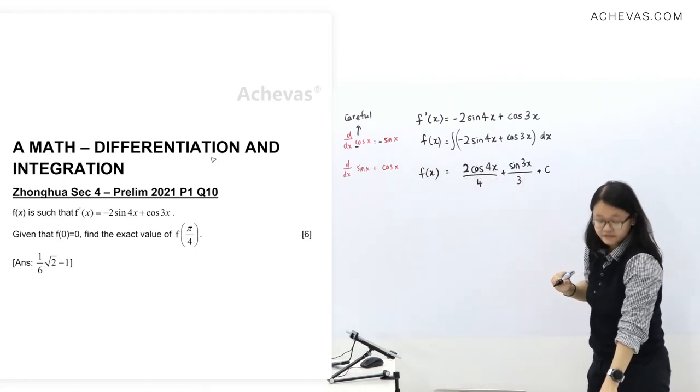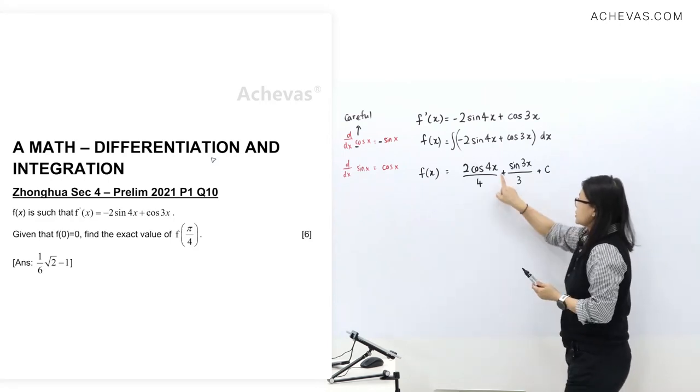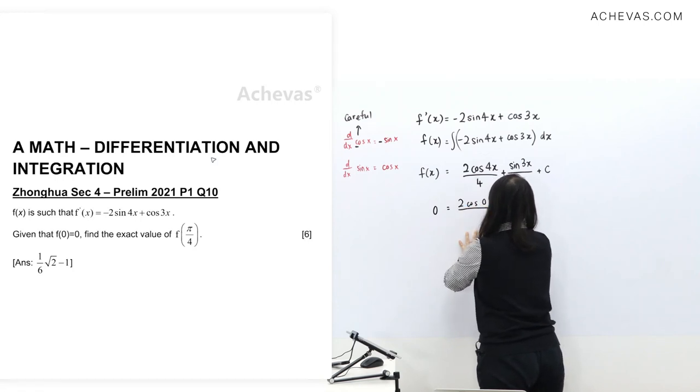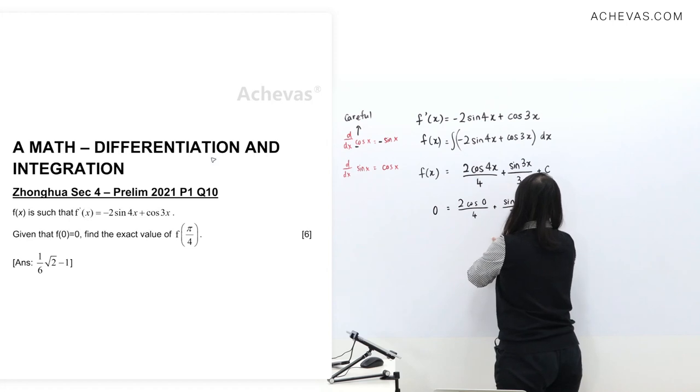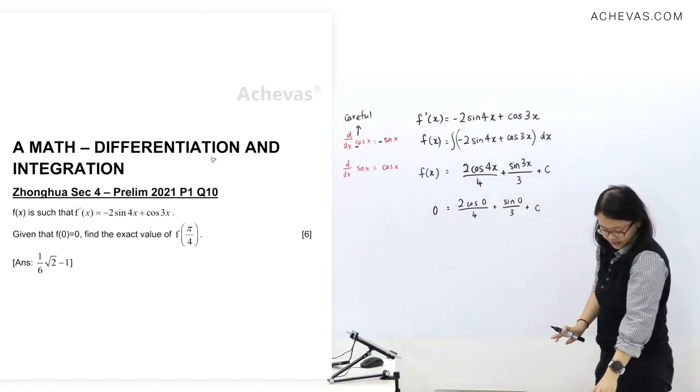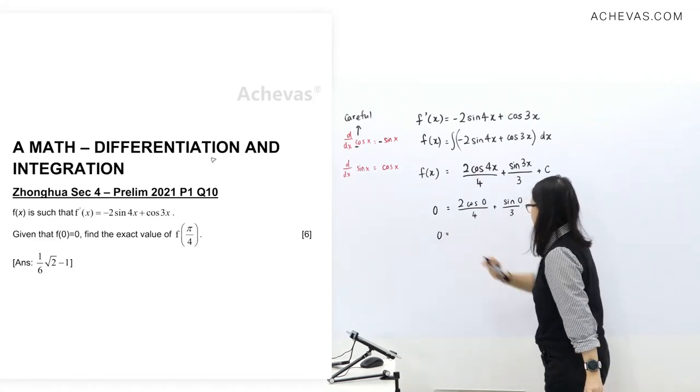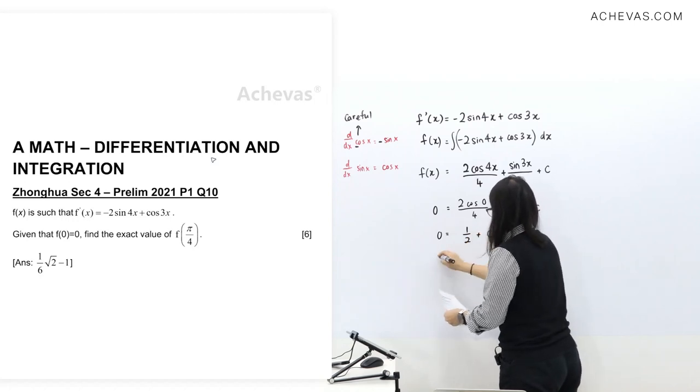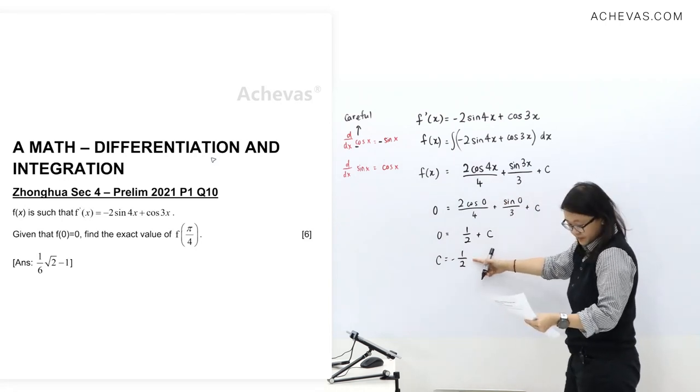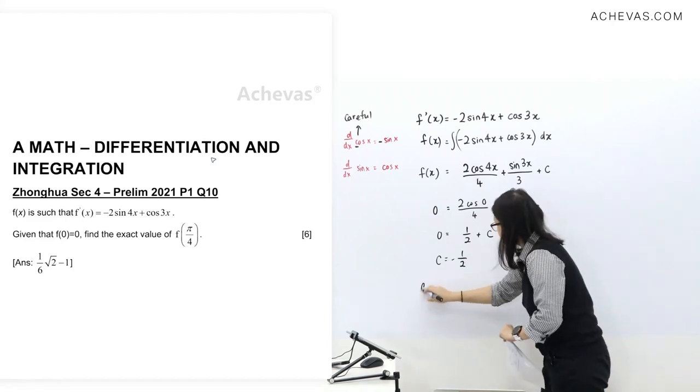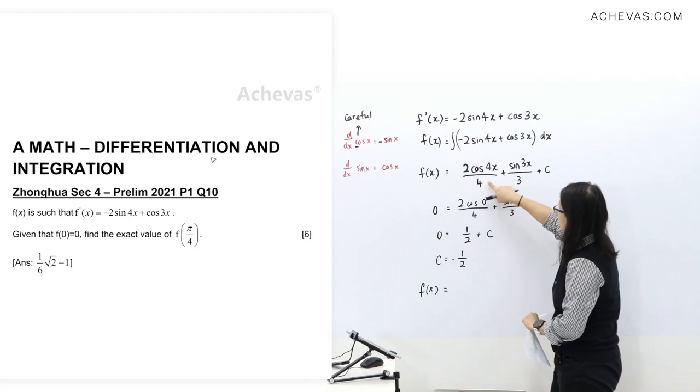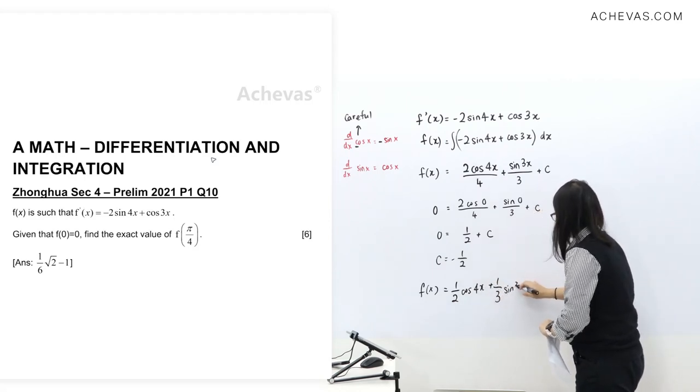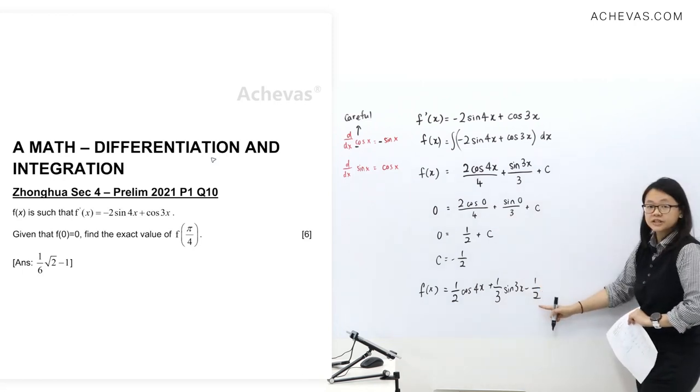So let's see what we have. We have f(0) equals 0. That means when I insert 0 at the x position, I will get 0 as my answer. So 0 equals 2 cos 0 over 4 plus sine 0 over 3 plus c. Solving this, we find c equals negative 1/2. So this is our expression for f(x), and we need to find f(π/4).